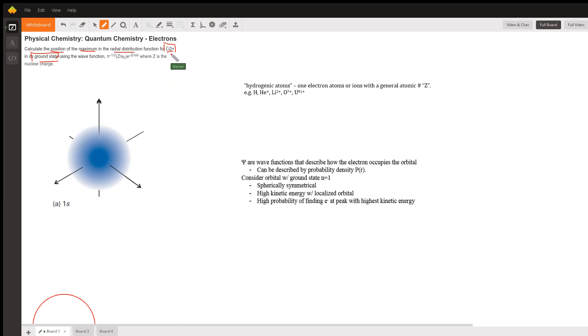So what do we really mean by the lithium ion being in its ground state? We're basically talking about a hydrogenic atom. What is it? It's basically an atom with one electron or with some general atomic number z.